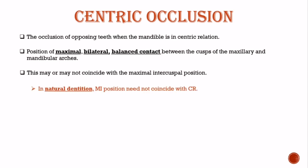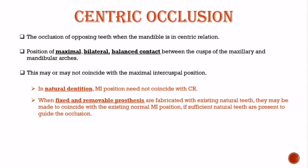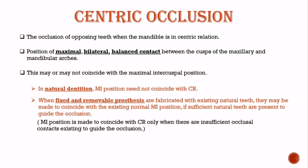In natural dentition, maximal intercuspal position need not coincide with centric relation. Whereas when fixed and removable prostheses are fabricated with existing natural teeth, they may be made to coincide with the existing normal maximal intercuspal position if sufficient natural teeth are present to guide the occlusion. It should be noted that maximal intercuspal position is made to coincide with centric relation only when there are insufficient occlusal contacts existing to guide the occlusion. Whereas in complete dentures, maximal intercuspal position is always given at centric relation.